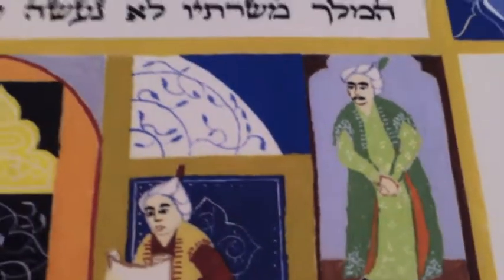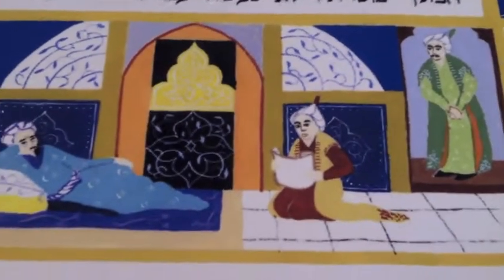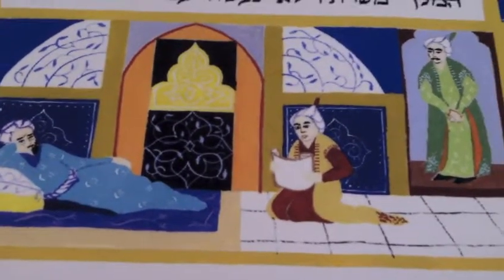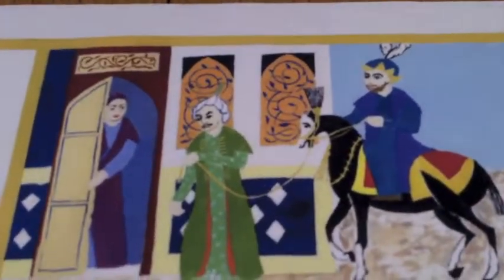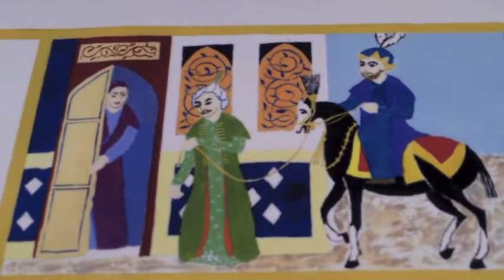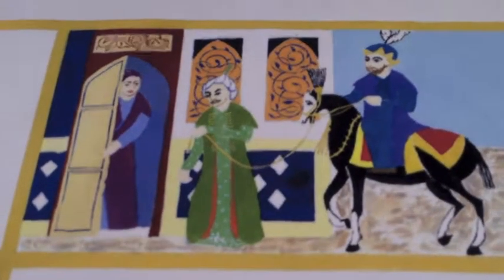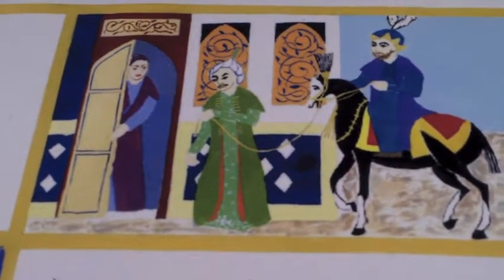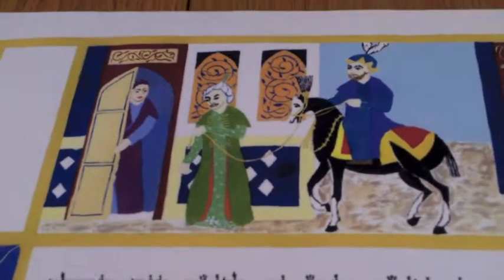At this point in the story, Ahasuerus sees Haman and says: what shall I do to honor the man at the top of the kingdom? Haman thinks it's him, and he says: dress the man in the king's garments, put him on the king's horse and take him through the streets calling out, 'this is the man whom the king prefers.' So to Haman's sorrow, he finds out he has to lead his archenemy Mordecai through the streets.